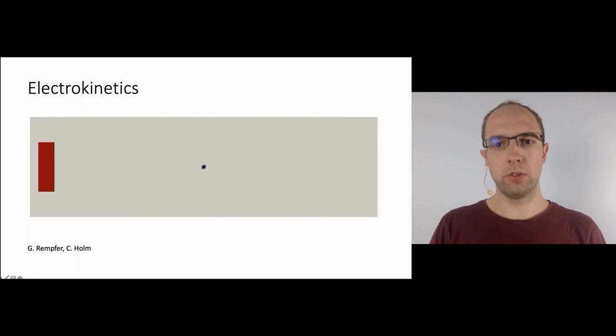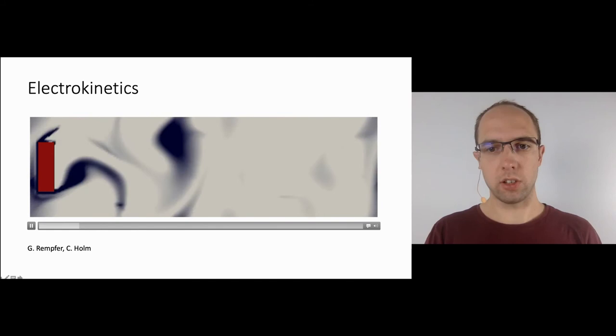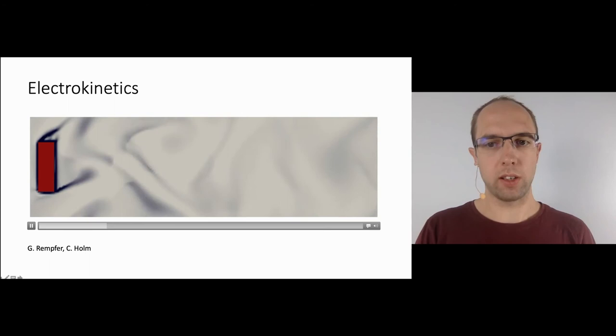Here we can see the animation of an ESPResSo electrokinetic simulation of a charge density that is affected by an externally driven fluid. The charge density is shown in dark and an obstacle is shown in brown. A turbulent flow establishes and vortices can be seen in dark color.